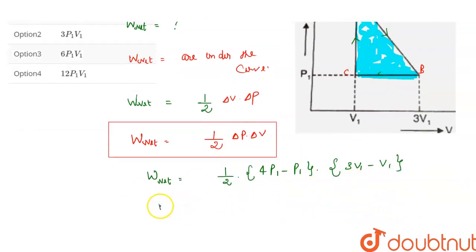So w net work done should be equal to 1 by 2, and here we have 3P₁, then here we have 2V₁.